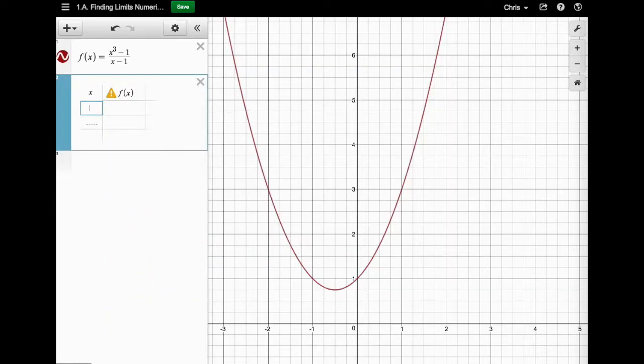All right, for this step it says to put values that are infinitesimally closer to one from either side. And it says to start with values that are less than one. So that would be values like 0.9. It says to start with 0.9.